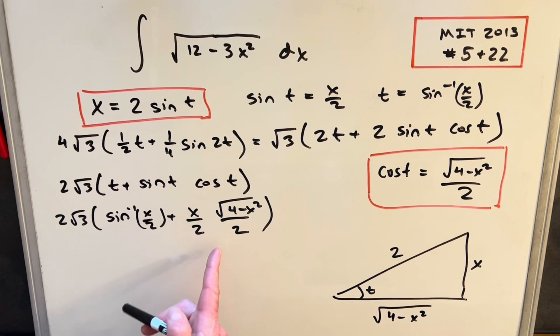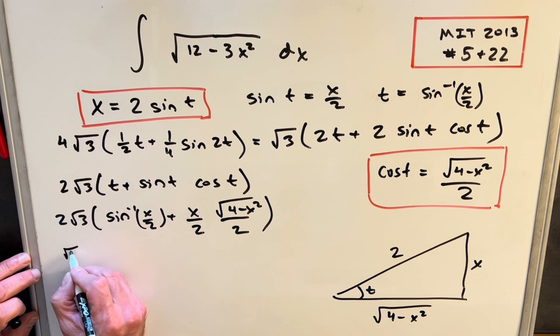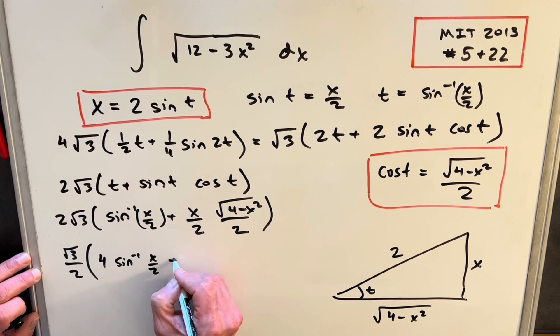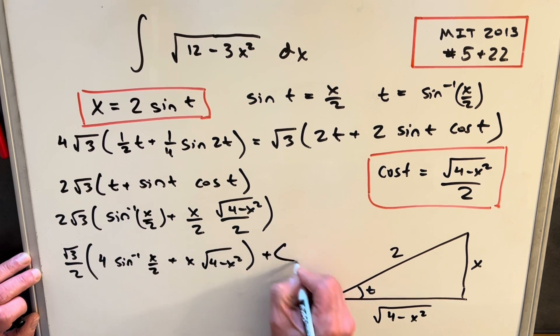And then just one more little simplification. I think I'll pull a 1 fourth out of here. We get the 2 times 2 here, just to make it a little cleaner. So if I pull a 1 fourth out of here, we're going to have square root of 3 over 2. With the 1 fourth out, this is going to become 4 arc sine x over 2 plus x square root of 4 minus x squared plus c.